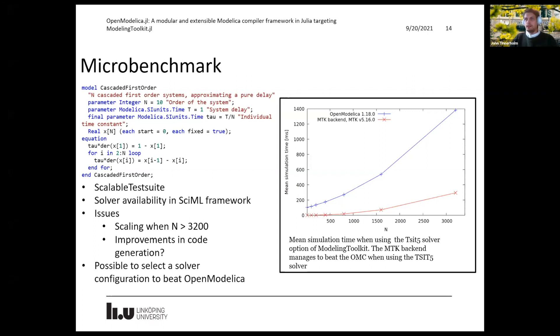And I believe that in addition, the addition of symbolic arrays, as Chris mentioned earlier in the Julia keynote, will be very beneficial in improving performance. So we don't have to scalarize the entire system because currently the code generator is stupid. It basically scalarizes arrays into separate equations and variables.